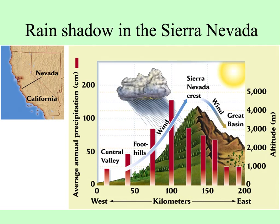One place you can see this is in the Sierra Nevada, with the Pacific Ocean to the west. The foothills coming out of the Central Valley receive a lot of rain, so the west side of the mountains — the side toward the ocean — is green. As the air travels over the crest and warms, it pulls the moisture up, and we get very dry conditions in the Great Basin.